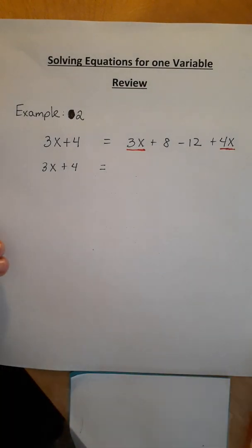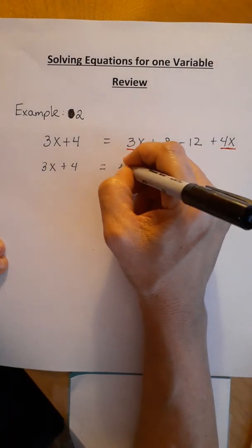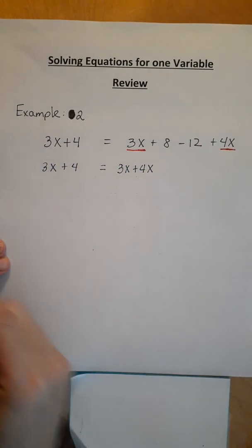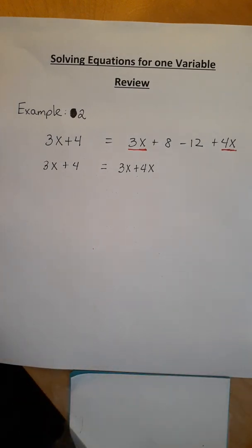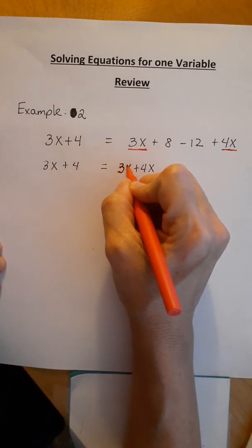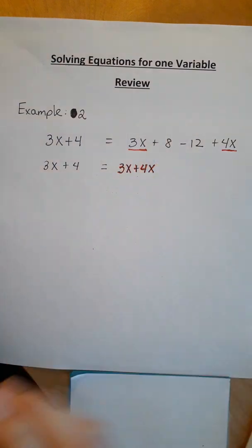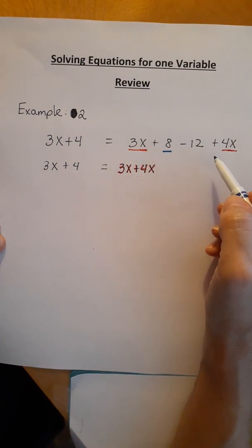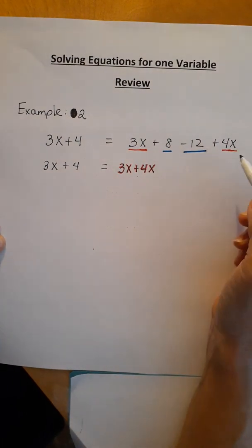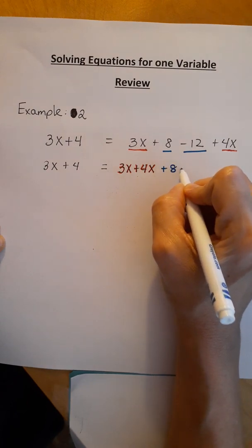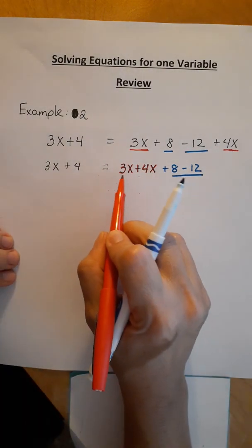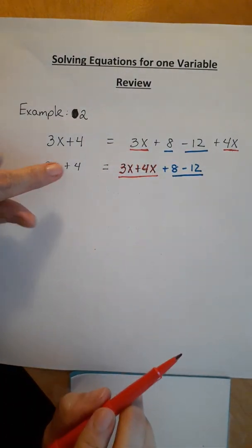I'm going to write one next to each other. 3x plus 4x. These are like terms. I'm writing them next to each other. Now, what do we have after that? We have 3x plus 4x. Now we are going to work with what's left? 8. That's a number. Do I have another number here in this side of the equation? Yes, I do. And it's positive 8 minus 12. We're going to look at this, and we're going to look at this piece. That's already in simplest form.